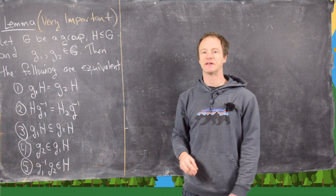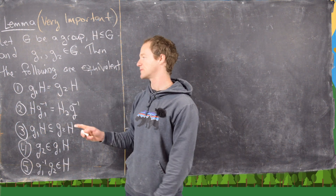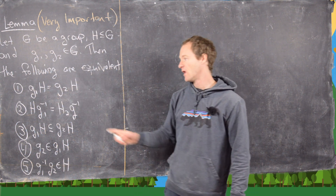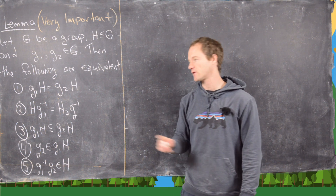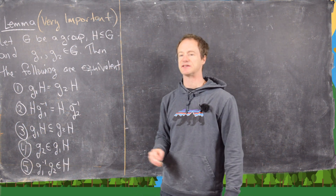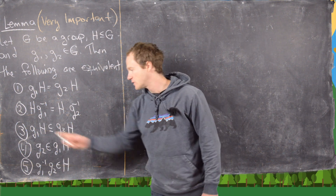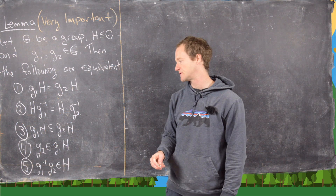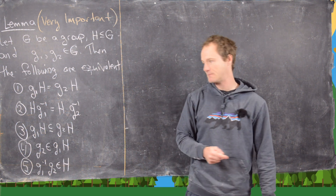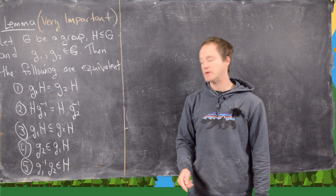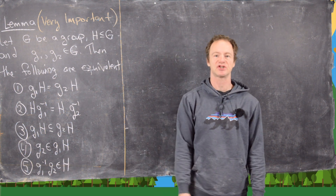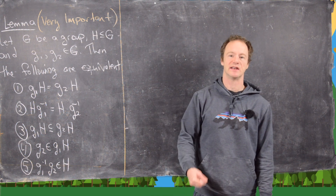Then the following five statements are equivalent. First, the left coset with representative g1 equals the left coset with representative g2 — in other words, g1H = g2H. Second, HG1⁻¹ = HG2⁻¹. Third, g1H is a subset of g2H — interestingly, being a subset implies equality. Fourth, g2 is an element of the coset g1H. And fifth, g1⁻¹ times g2 is an element from H.